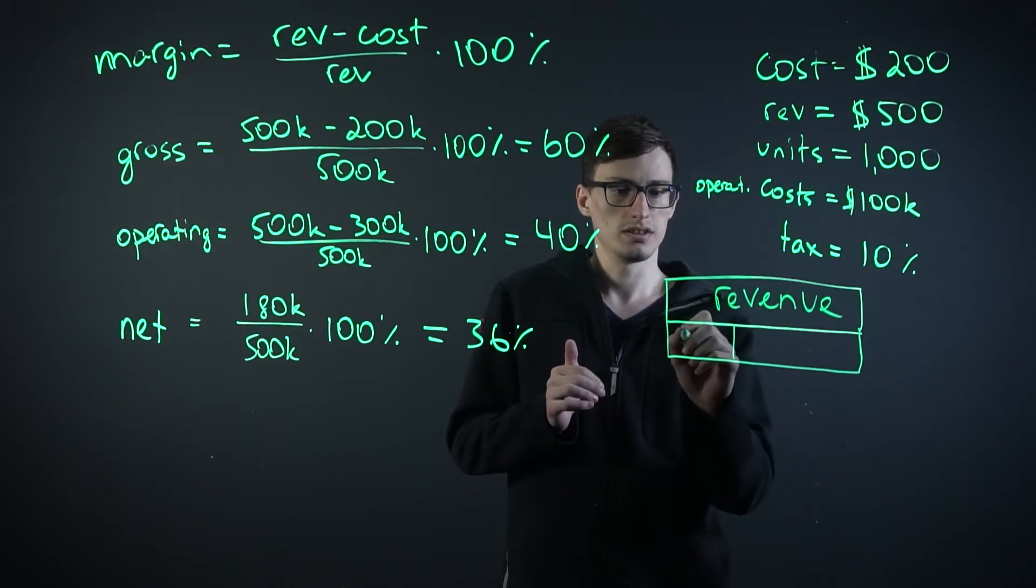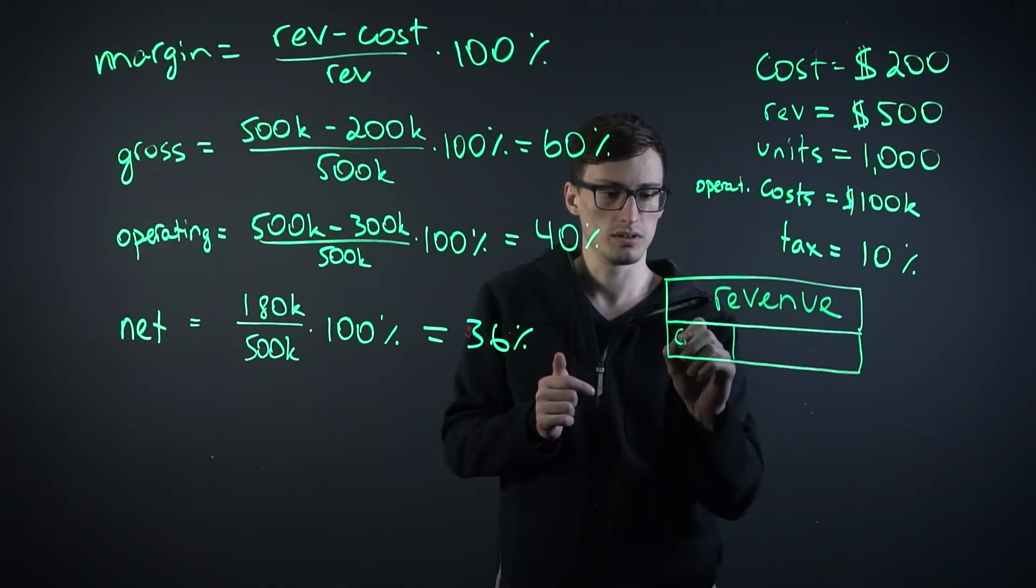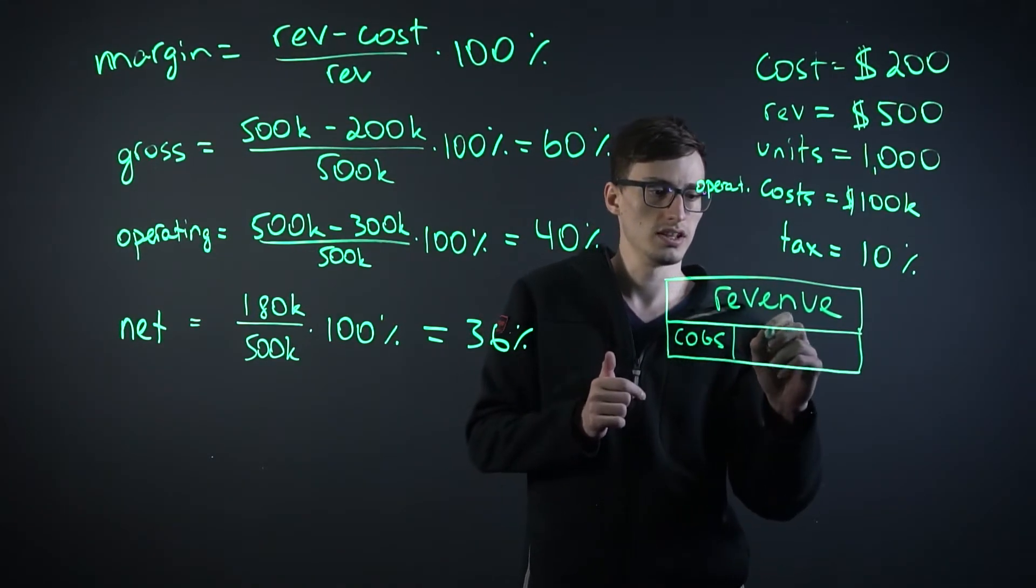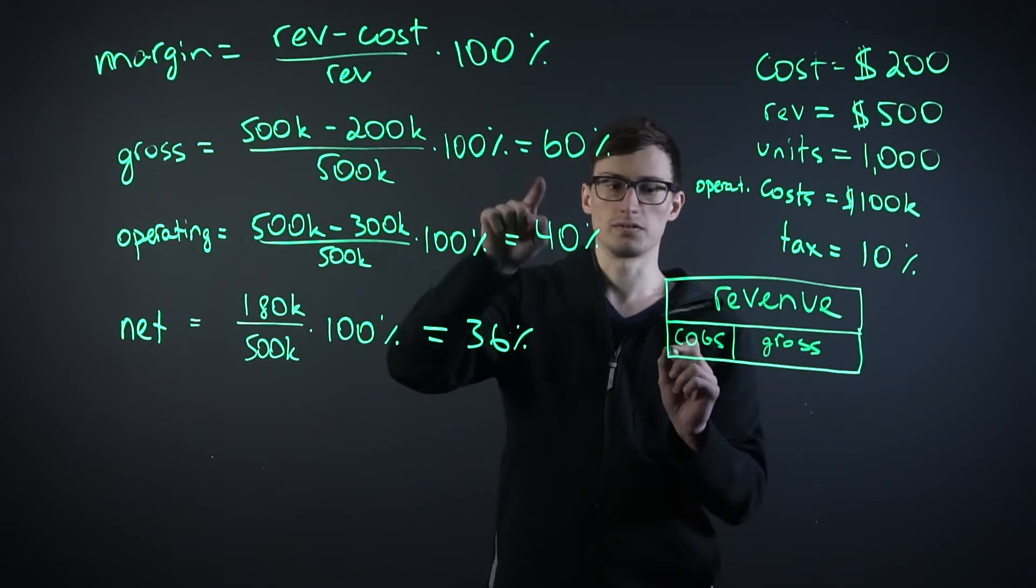And then that breaks down into two levels. The first one is cost of goods sold, the $200,000 that you pay for the laptop and it's abbreviated as COGS, C-O-G-S. And then this is the gross margin, or first level.